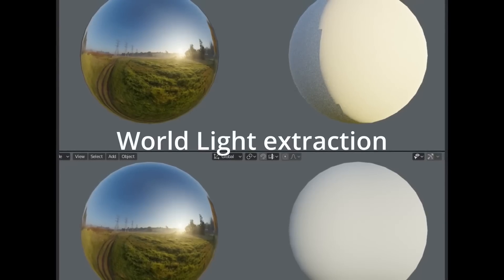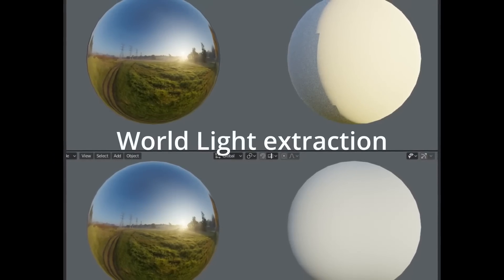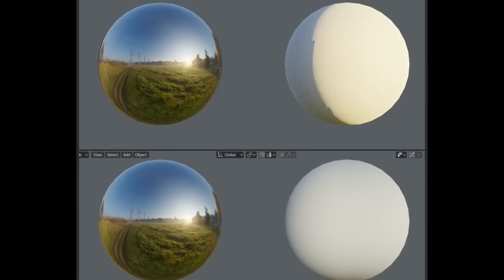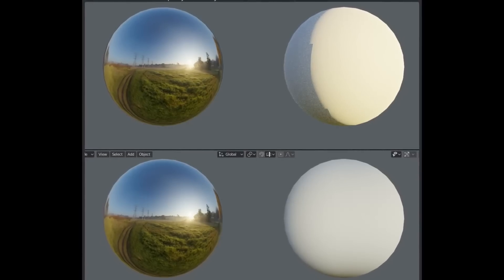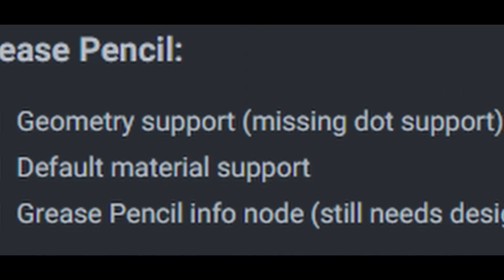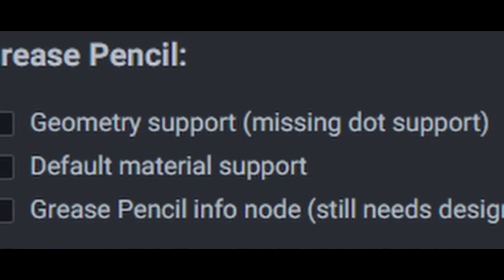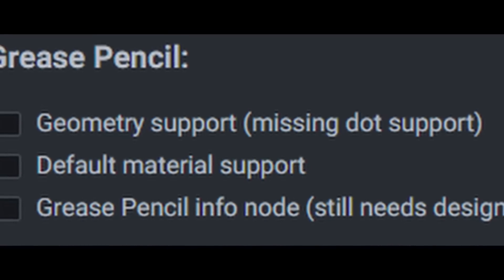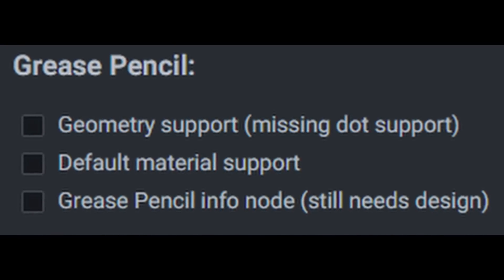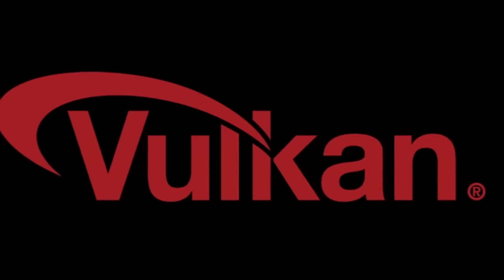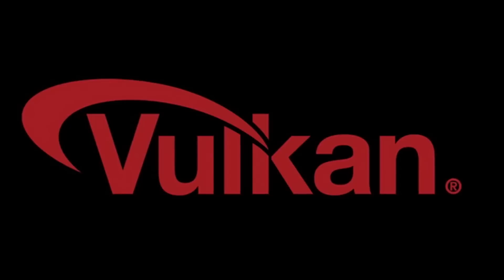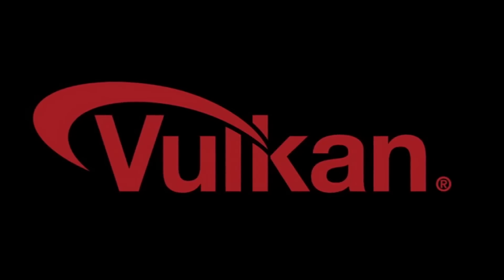We will also get world light extraction, which makes your lighting look more closely like Cycles — so the environment lighting. The last thing is we may get a grease pencil info node in the shader editor. Another big integration alongside the new engine is the integration of Vulkan, which replaces the old OpenGL.